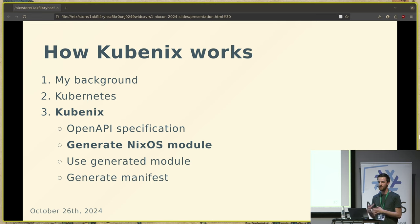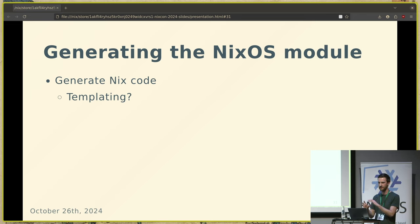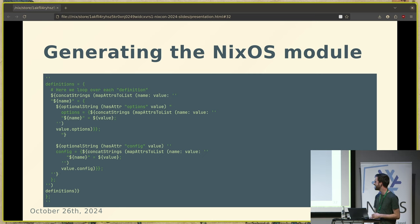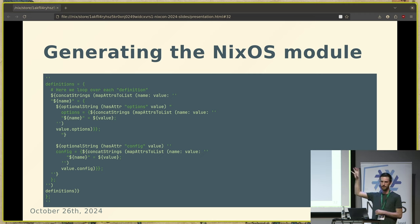From this OpenAPI spec we want to create a NixOS module. We need to generate Nix code — I think this is kind of the ugly part of this project. It's not as simple as converting JSON to Nix code, because we have unevaluated Nix code — Nix modules — as functions that we want to generate. This is how it looks — it's still a template, kind of as bad as Helm, but this has already been done for you if you want to use it. At the bottom you can see definitions grabbed from OpenAPI, templated as a Nix structure.